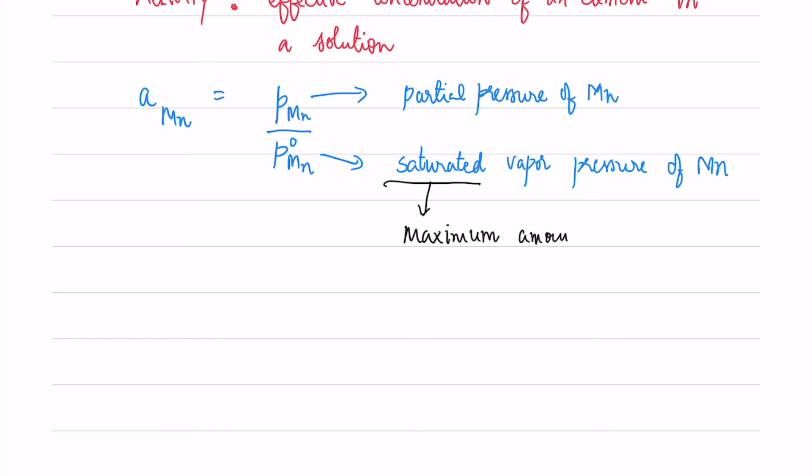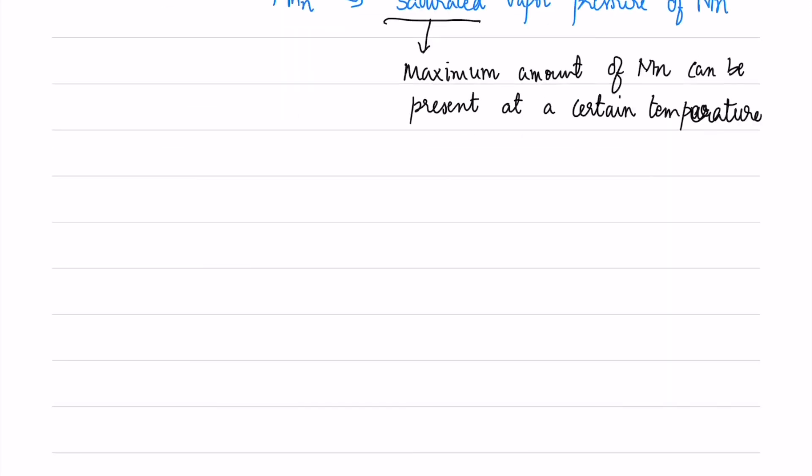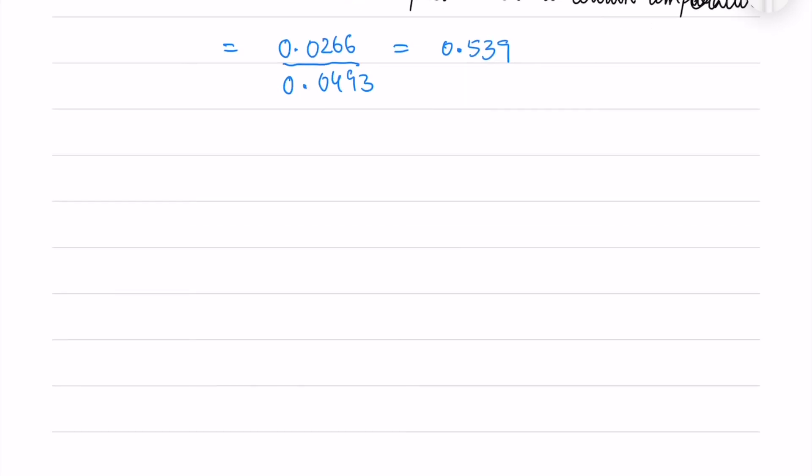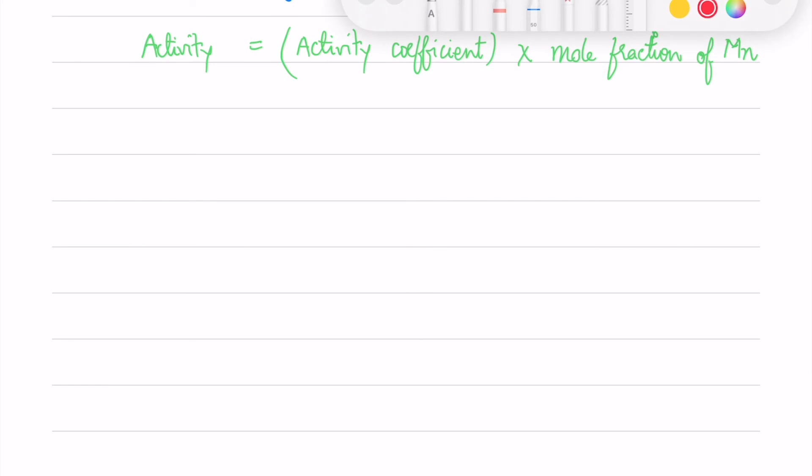Saturated means the maximum amount of manganese that can be present at a certain temperature in the gas. More than this amount is not allowed. We divide the partial pressure by the saturated vapor pressure to get the activity of manganese. We know that activity equals activity coefficient times mole fraction of manganese in the melt.